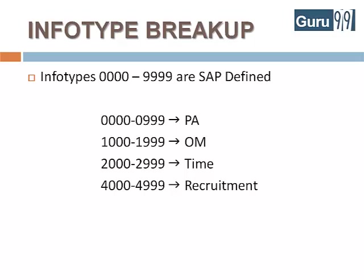If you think the existing predefined info types do not meet your requirements, you could create your own custom info type and give it a number from 9000 to 9999.